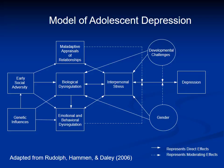Today I plan to talk about a piece of this model that focuses on how challenges during the transition to adolescence contribute to the rising rates of depression in girls, and how both early social adversity and recent interpersonal stress play a role in this process. Depression might then further interfere with normative development by causing girls to generate even more stress in their relationships.